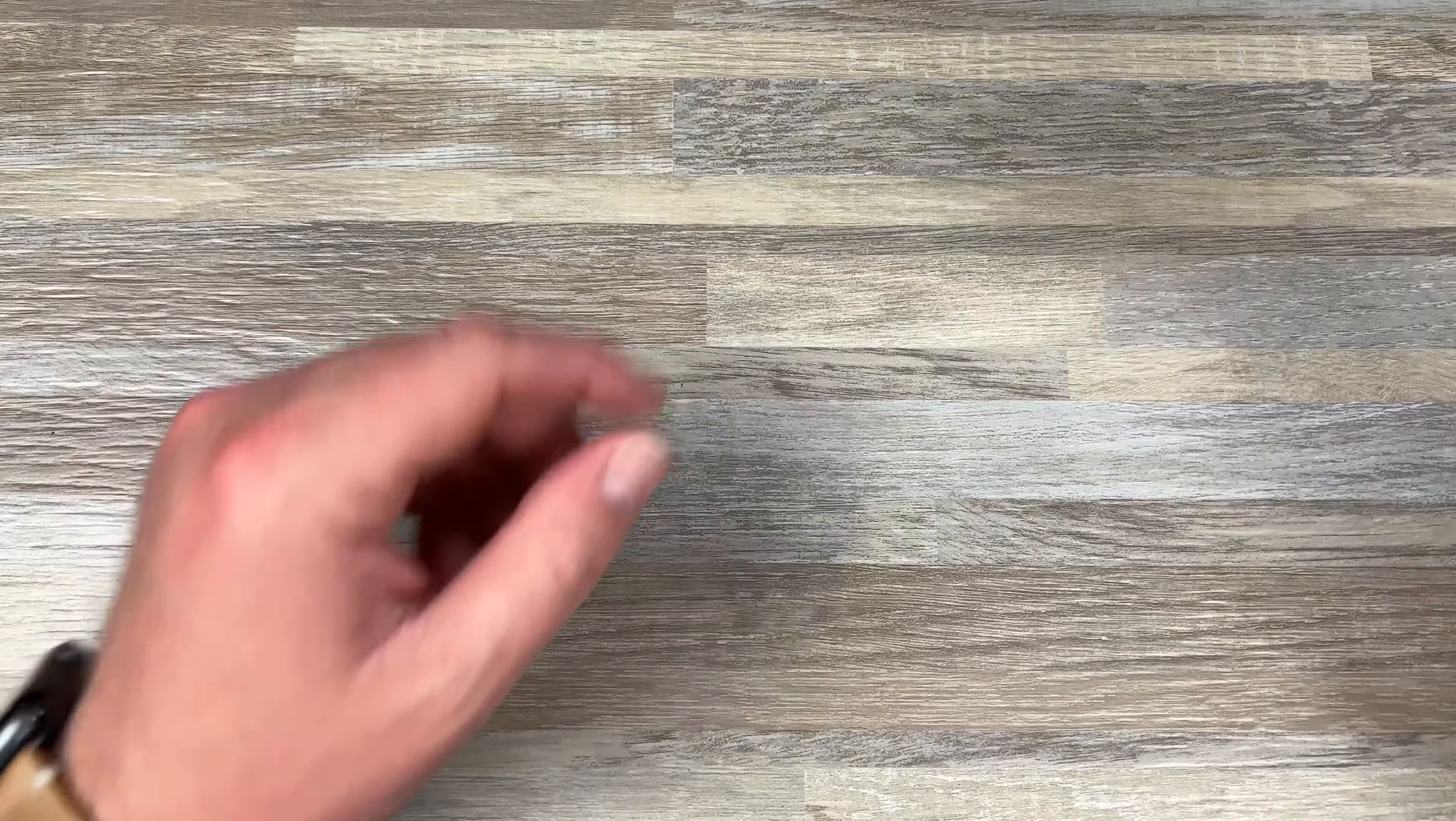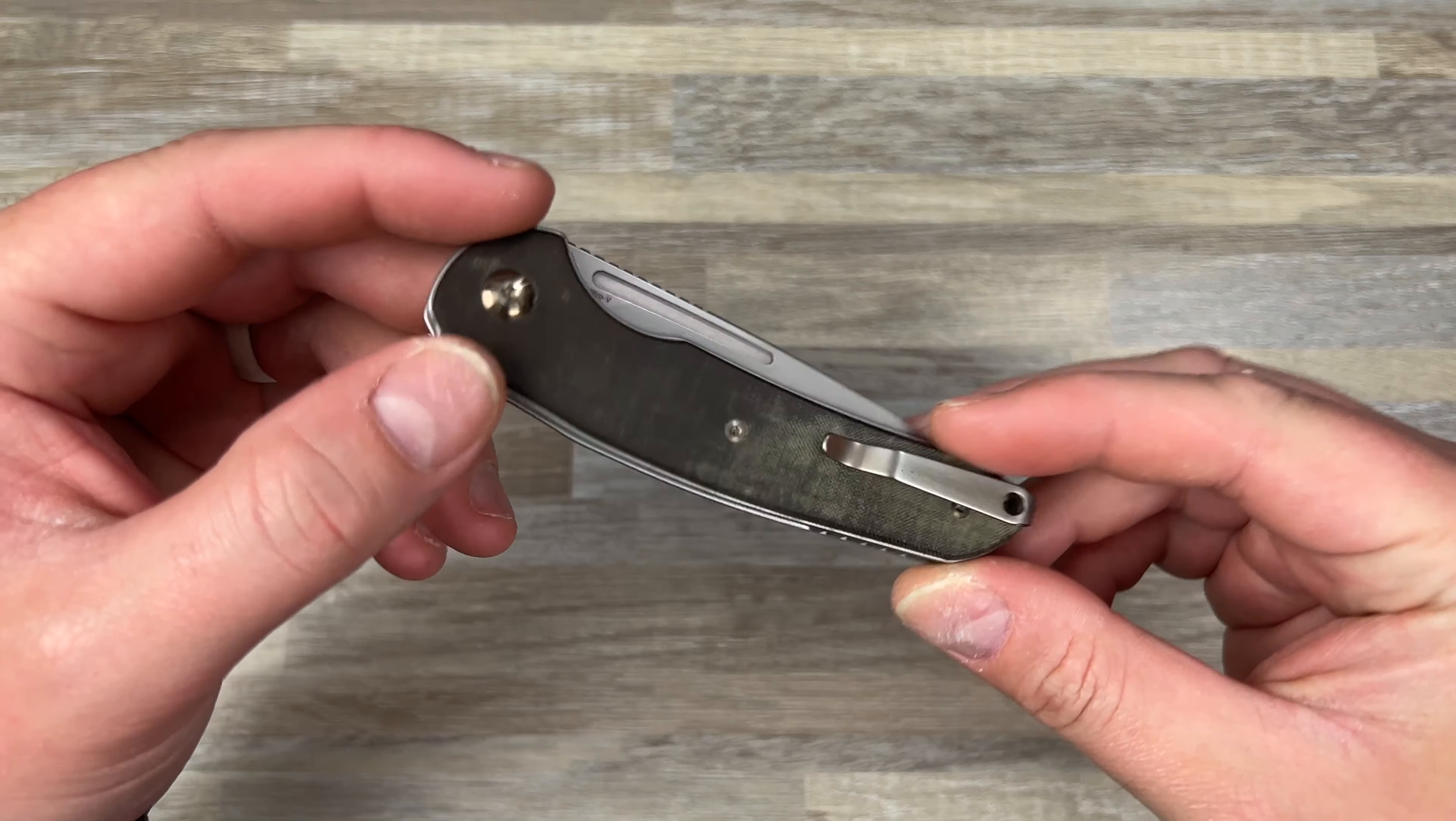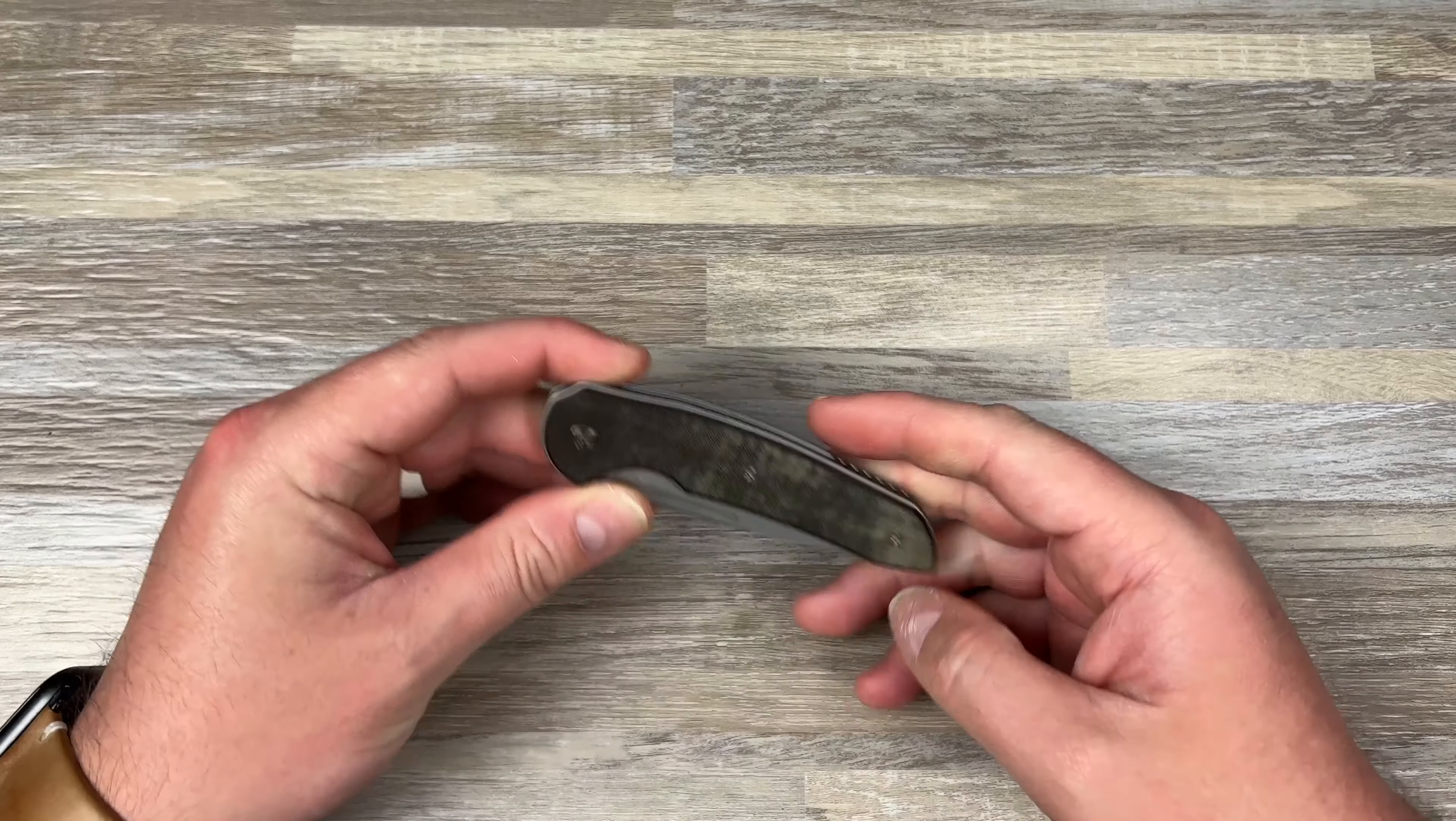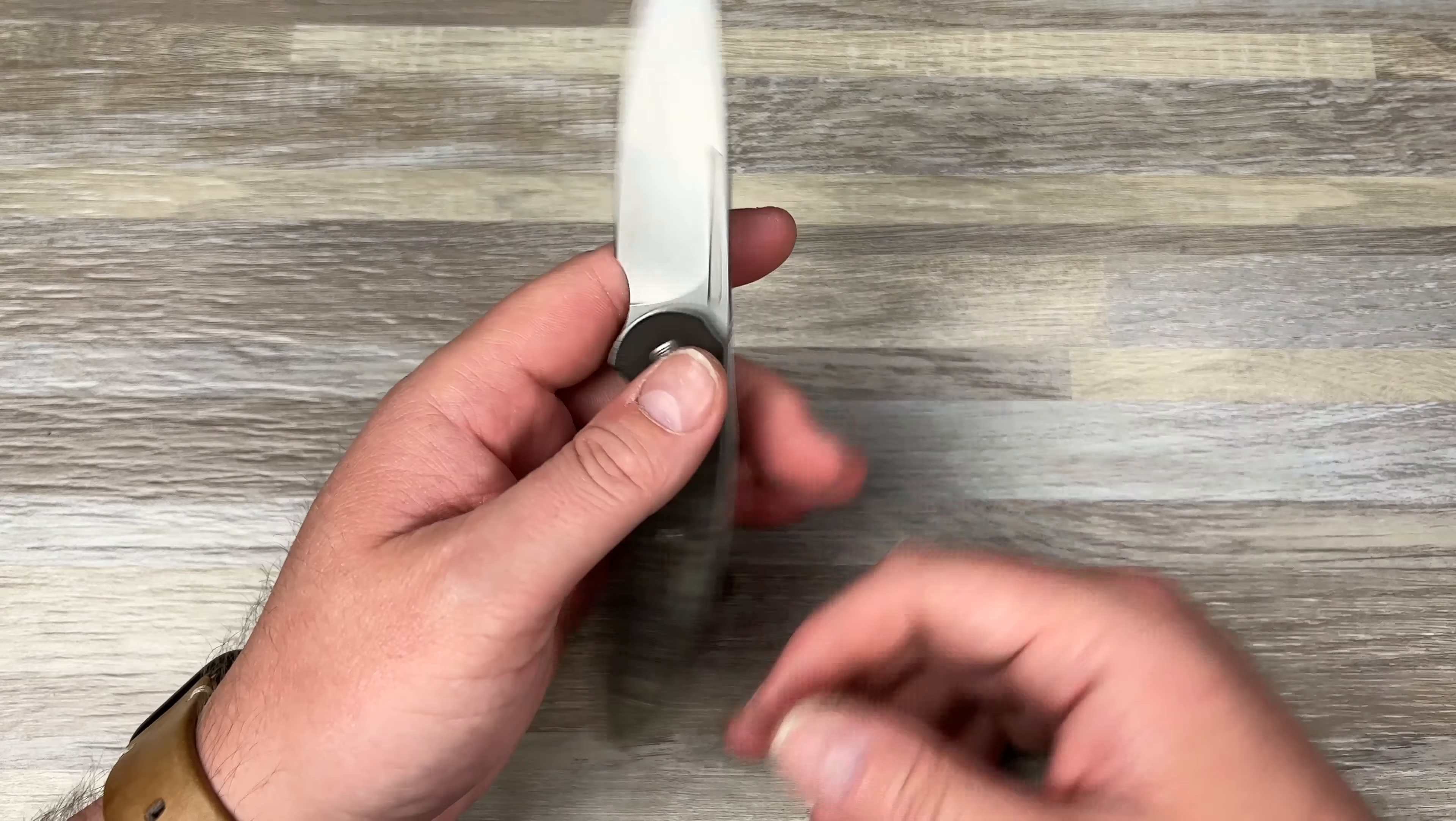The next one here is the Ferrum Forge Stinger. This is the G10 and Nitro V Stinger that I have modded. What I did first was I got these scales from Cerberus Knives. Chris over at Cerberus Knives makes scales and these micarta ones are really cool. I really like this micarta - this is probably my favorite micarta I've handled. I don't know what it is that he used, if it's linen or what, but to me this is the best micarta. It's got a little bit of softness to it but it's still solid. I'm not really a huge fan of the canvas micarta that everybody uses.